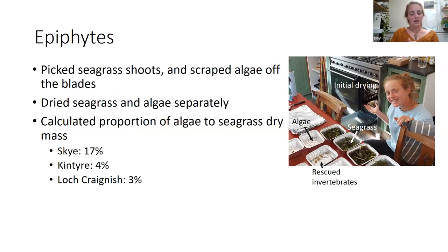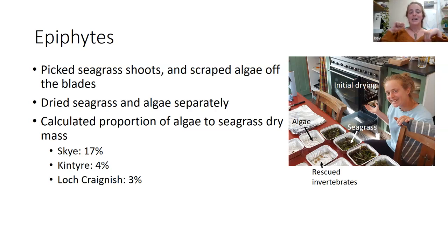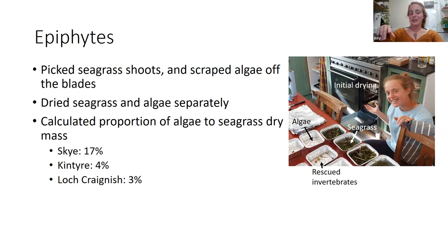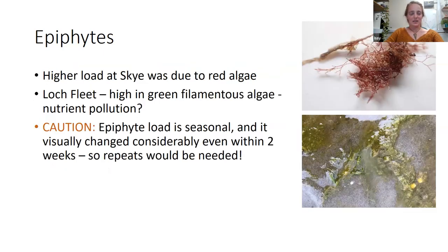I used a simple method to quantify epiphytes, just this year at my subtidal sites. I picked seagrass shoots from my quadrats, painstakingly scraped off the algae from the seagrass blades using microscope slides, then dried the seagrass and the algae separately — first in the oven where I was staying to prevent rotting, and properly back in the lab. I then calculated the mass of algae and seagrass and looked at the proportion of algal mass compared to seagrass mass.